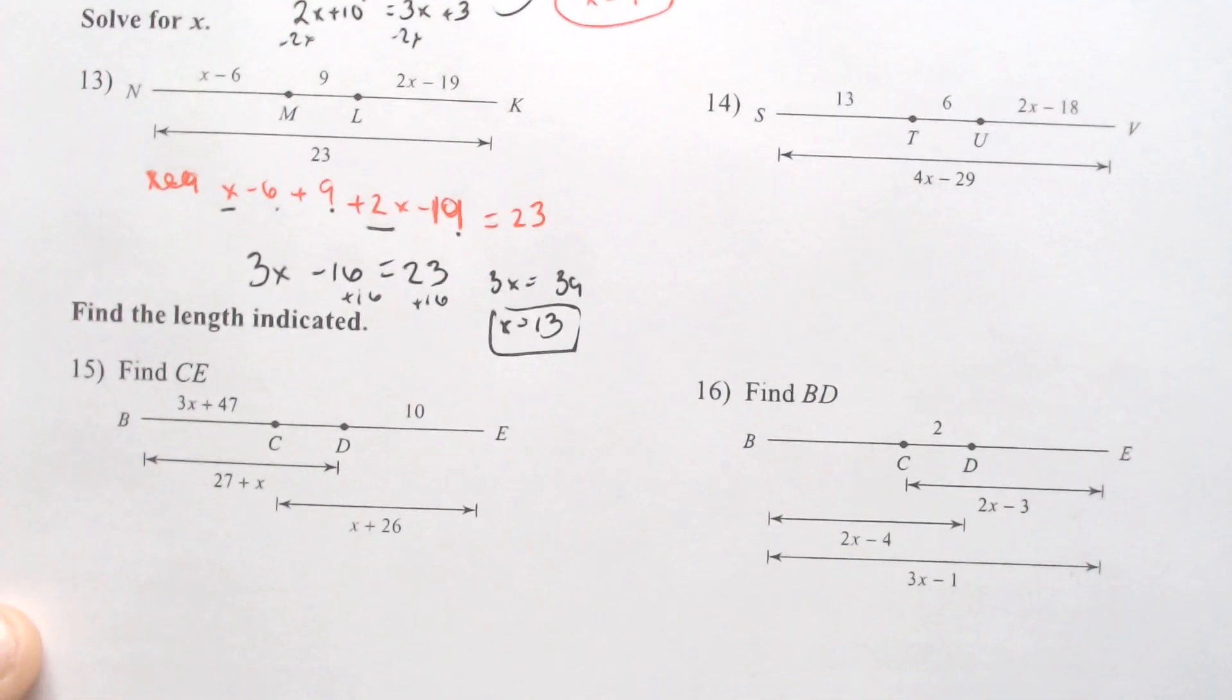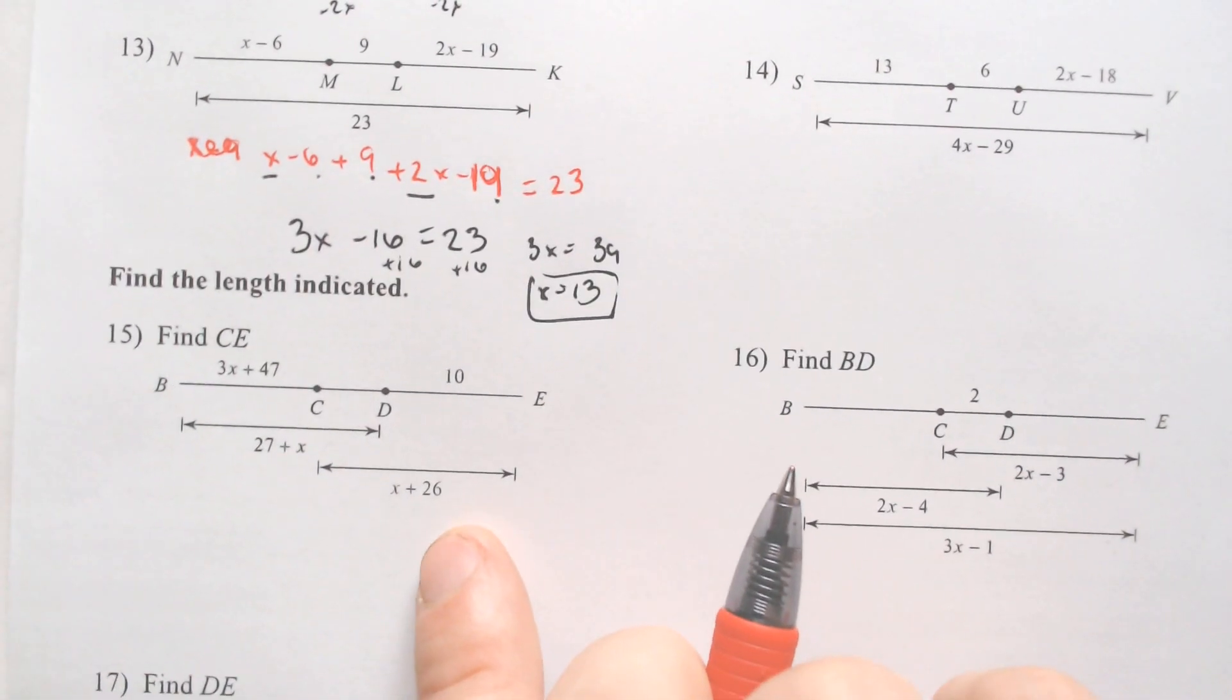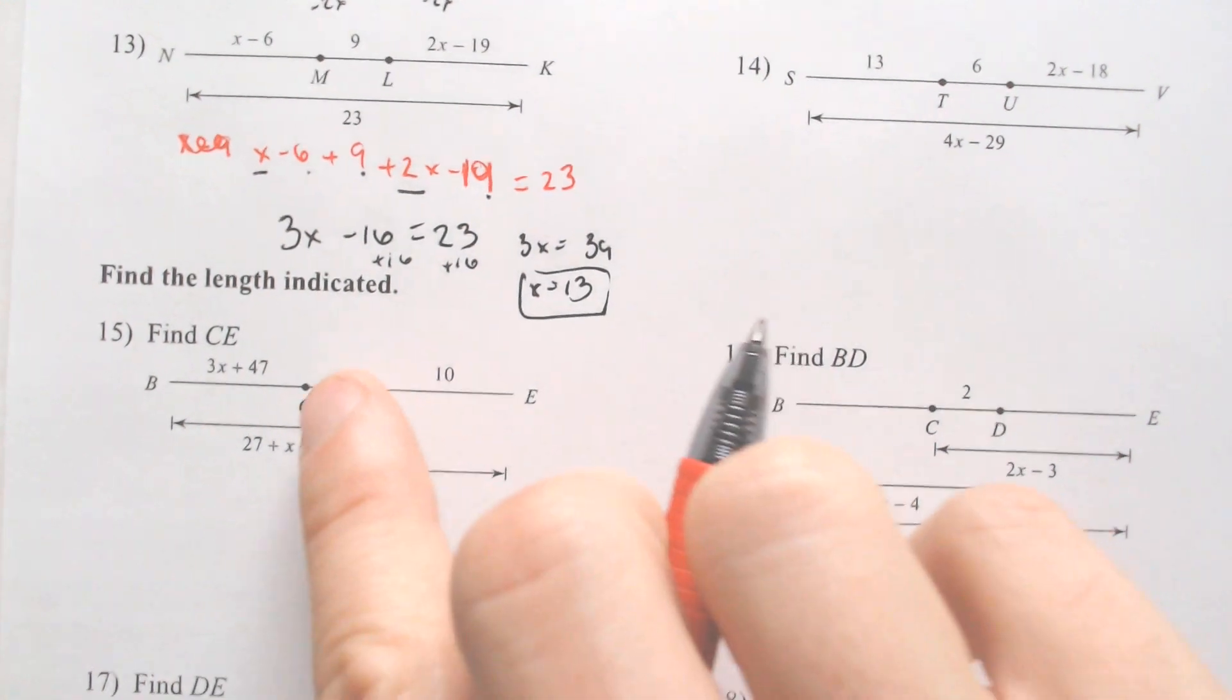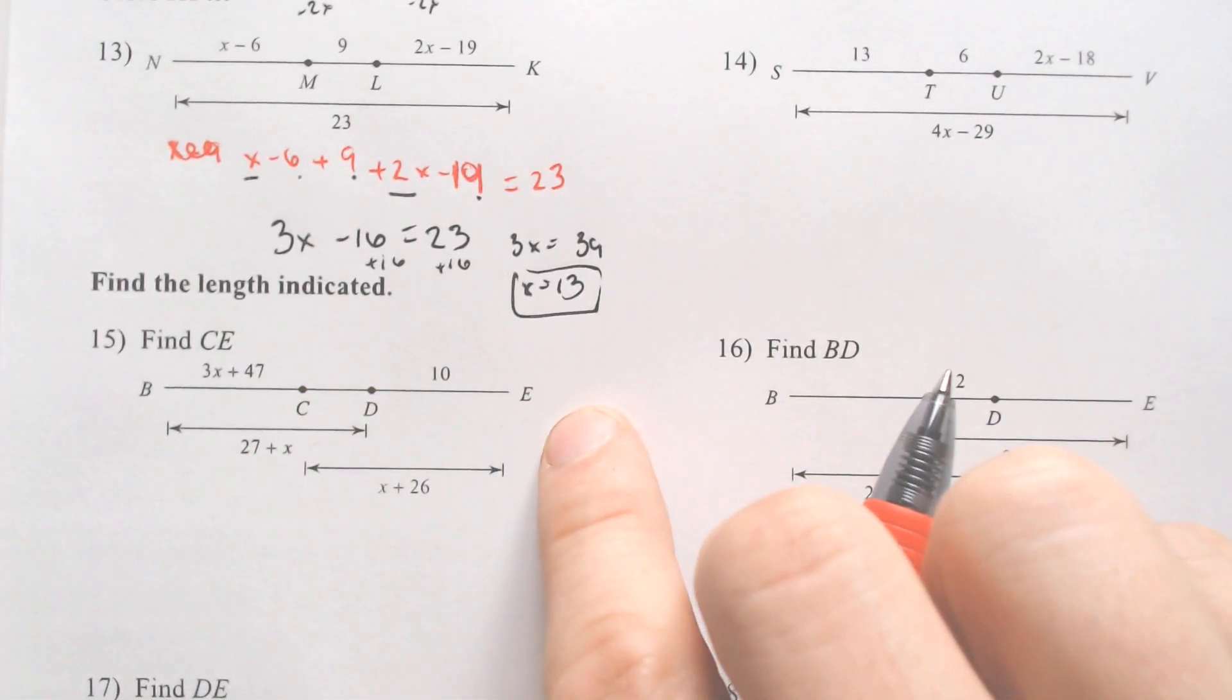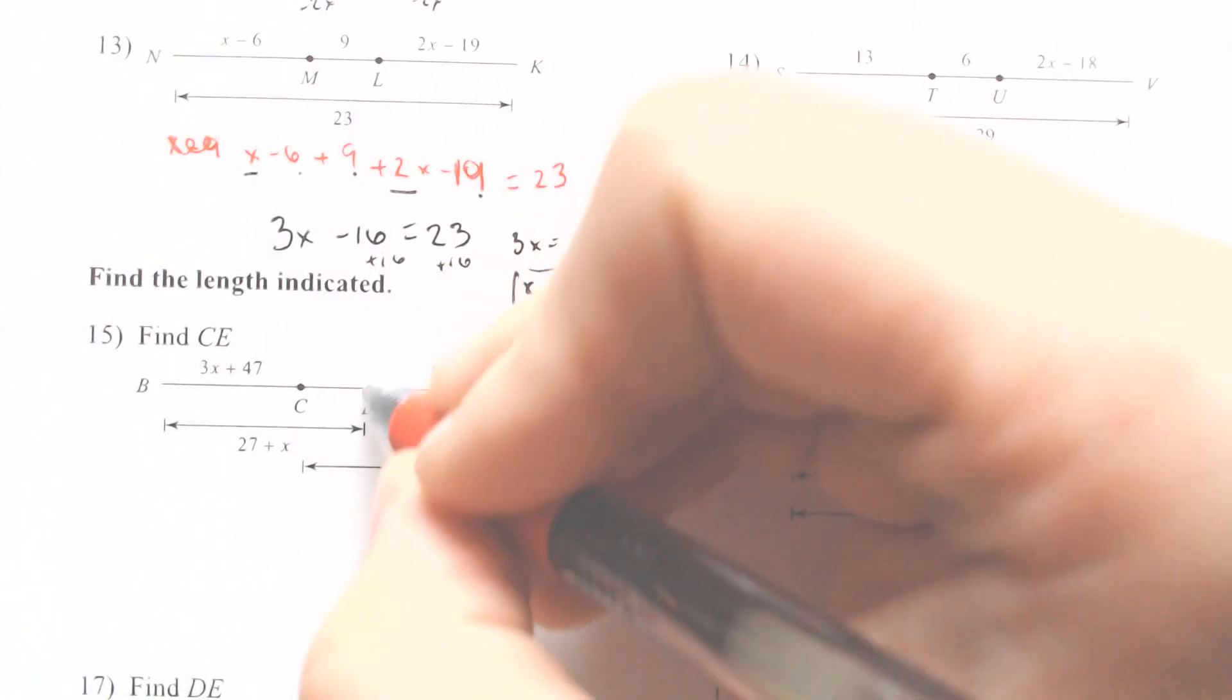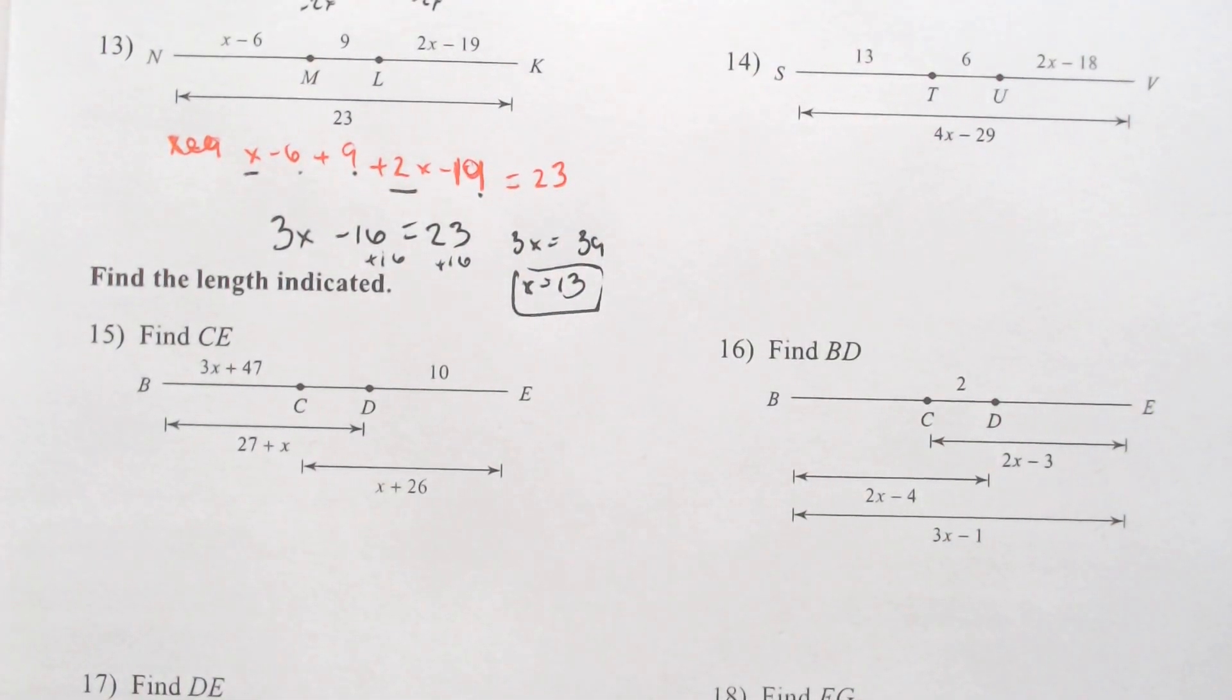One more. This one is probably another upgrade because it looks harder, to be honest. It wants us to find C all the way to E. In order to find C all the way to E, we have to first figure out what is CD. Let's think about that.